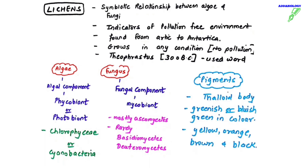When we talk about the pigments and color of lichens, we can see different pigments — they can be greenish, bluish, yellow, orange, even brown and black color lichens have been seen on this earth. The study of algae is phycology and the study of fungus is mycology.